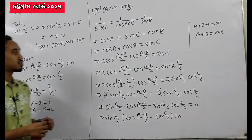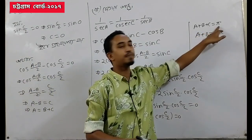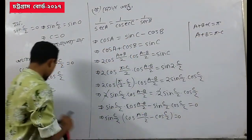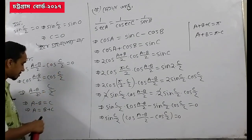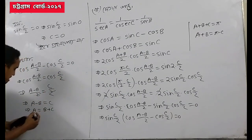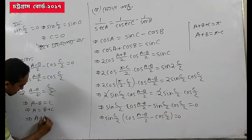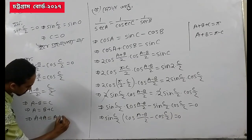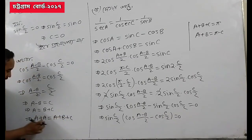So we have a plus b plus c equals pi. So we will write pi. We will state that a plus b plus c equals pi.